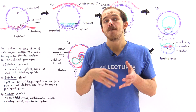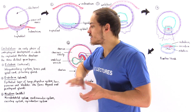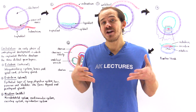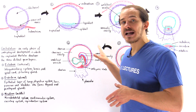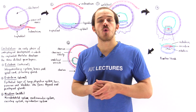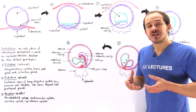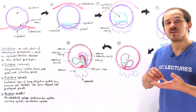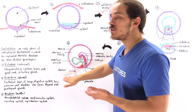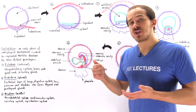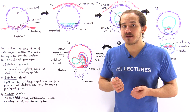Now let's discuss the internal layer — the innermost layer found in that developing embryo. This is called the endoderm. The endoderm layer gives rise to the epithelial layer of the lungs, our digestive system, the pancreas, the bladder, the liver, and it also forms the thyroid and the parathyroid gland, as well as the thymus.